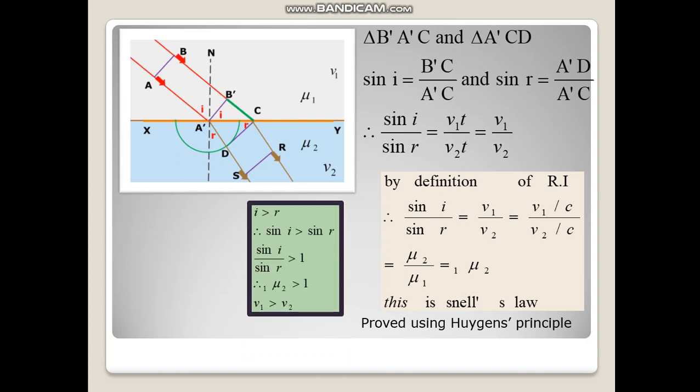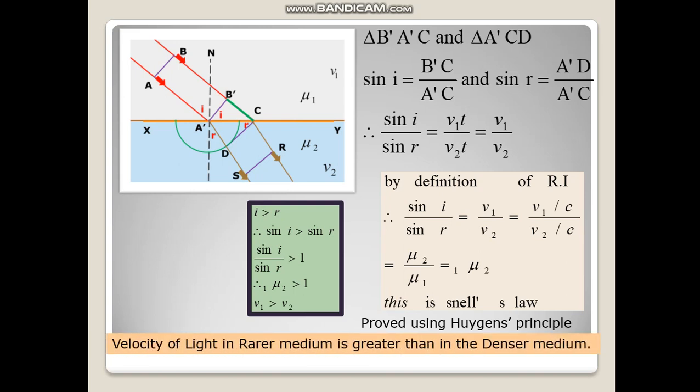Since I is greater than R, sine I is greater than sine R, so sine I upon sine R is greater than 1. Therefore mu2 with respect to 1 is greater than 1, and V1 is greater than V2. Therefore, velocity of light in the rarer medium is greater than in the denser medium. This is one of the most important things proved by Huygens wave theory. Note: refractive index RI can be represented as mu2 1, which is also equal to N2 with respect to 1.